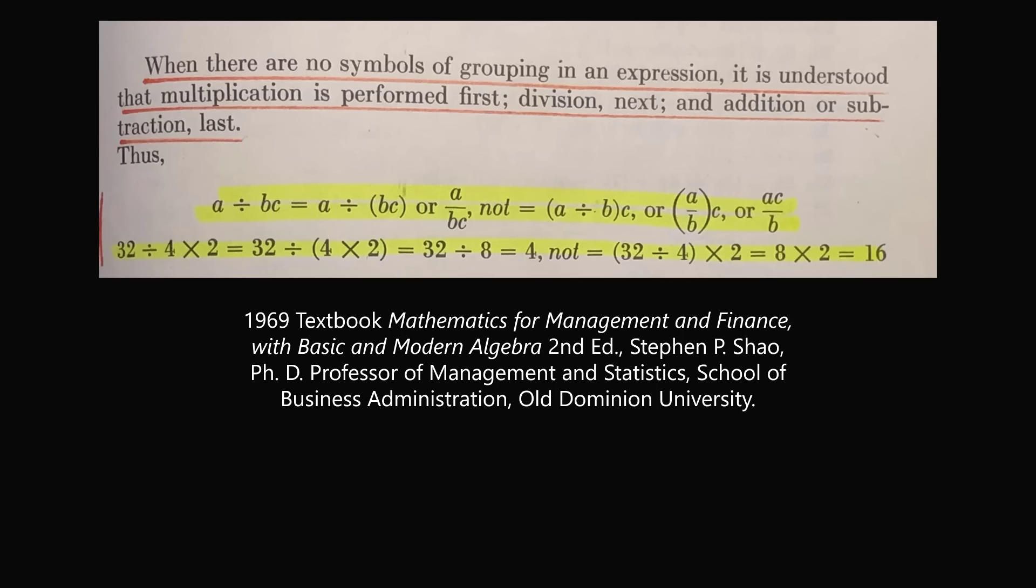So in this example, we have 32 divided by 4 times 2. And the author is saying you should group 4 times 2 first to get to 8. So then you have 32 divided by 8, which equals 4. And you don't just go from left to right, which would be 32 divided by 4 times 2, which would be 8 times 2, which equals 16.